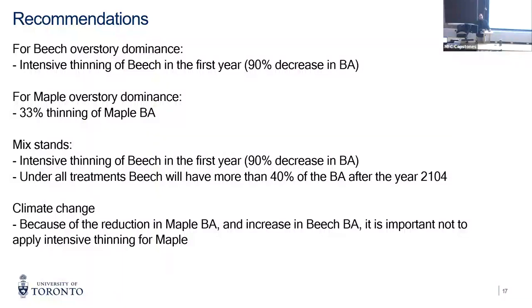Adam asks a second question: from these results, is understory control not really needed to manage beech — should we be focusing on overstory manipulation? Ricardo responds: the modeling results do show that, yes. The understory threshold is everything under 10 centimeters DBH and above 2 meters height. The dynamic in the model is that high numbers of understory create high competition, and this high competition reduces that understory number over the following 20 years through natural mortality — so the model captures that forest dynamic.